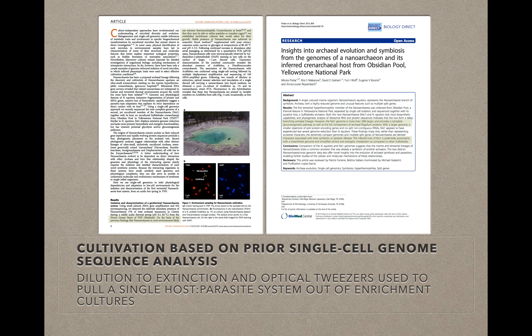Once they designed the culture media based on the predicted nutritional requirements, they did what they called dilution to extinction. This is a commonly used method for isolating hard-to-grow organisms. You basically dilute them until you have on average only one cell per milliliter for inoculum, so that most cultures are only inoculated with one cell and don't have to compete with anything else. Then they used optical tweezers to fish out a single host-parasite system out of the enrichment cultures and grew that up.